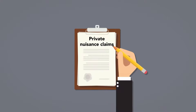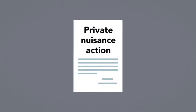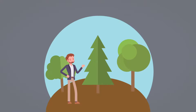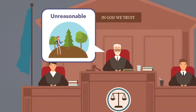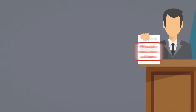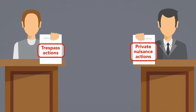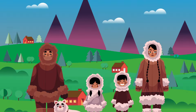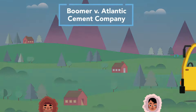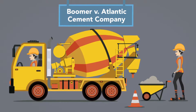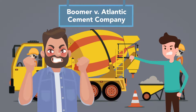Private nuisance claims protect individual property rights. In a private nuisance action, a defendant is liable if he intentionally and unreasonably invades the use of the plaintiff's land. A defendant's interference is determined to be unreasonable based on the harm it creates and based on whether the actions produce more harm than good. Private nuisance actions complement trespass actions because they account for activity that interferes with the use of the plaintiff's land without physically touching it. For example, the landmark case of Boomer v. Atlantic Cement Company found that a cement company created a private nuisance for nearby landowners due to the noise and vibrations it created.